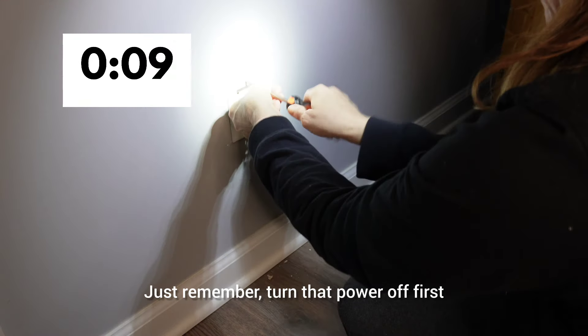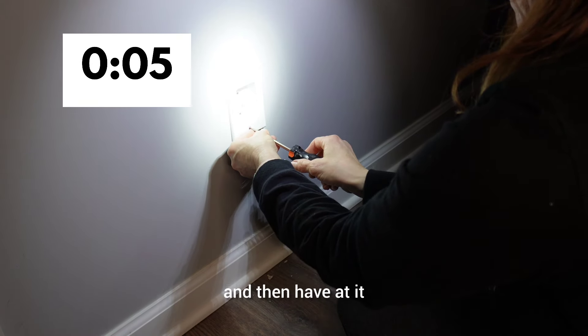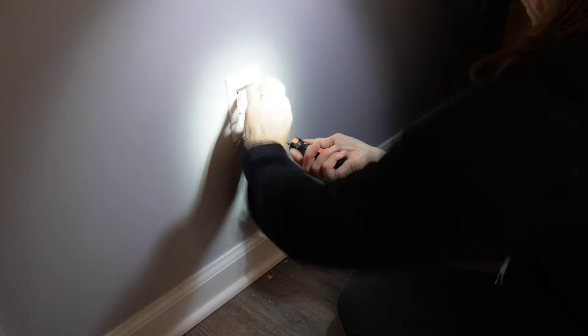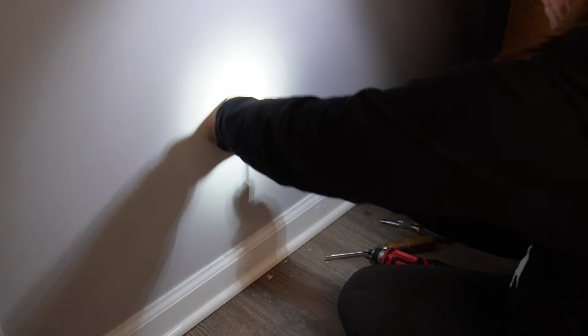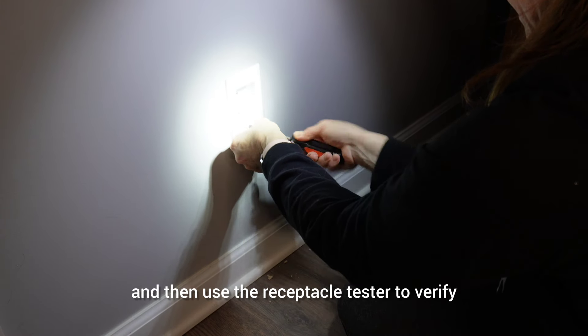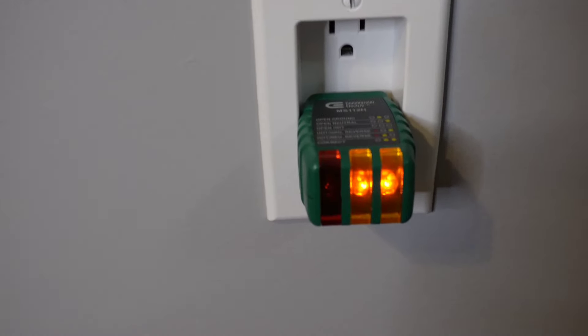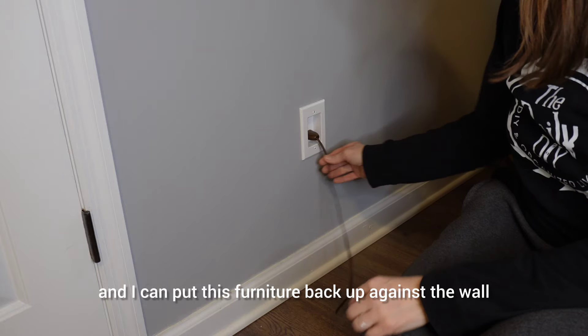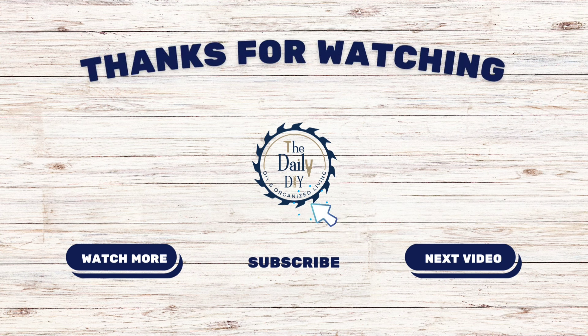Just remember, turn that power off first, use those receptacle testers, make sure the power's off and then have at it. And I should have used the electric screwdriver for this, but I couldn't find the flat bit. So here we are. And we're done. We're going to turn the power back on and then use the receptacle tester to verify that we have it installed correctly, which we do. So now we can plug this in and I can put this furniture back up against the wall and not have to worry about damaging the cord. Be sure to subscribe for more DIY Made Easy.